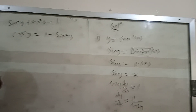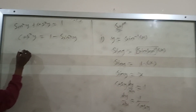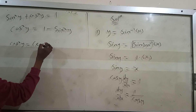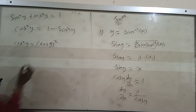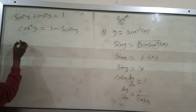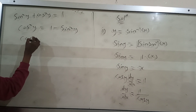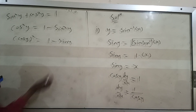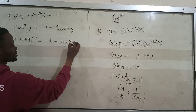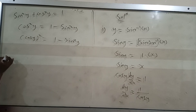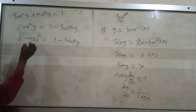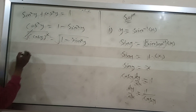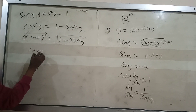Since cos squared y equals cos y all squared equals 1 minus sine squared y, we take square roots on both sides. The square cancels and we get cos y equals the square root of 1 minus sine squared y.